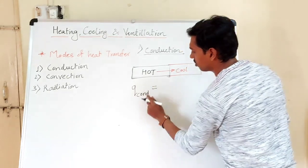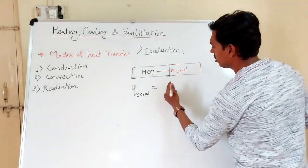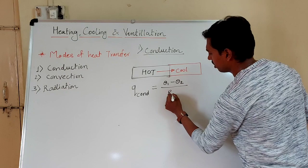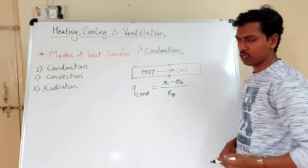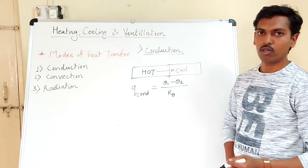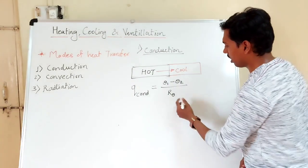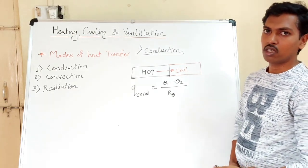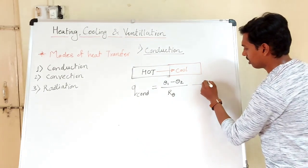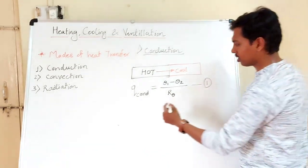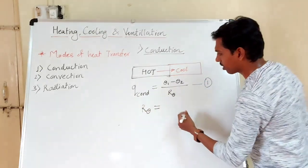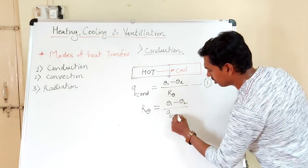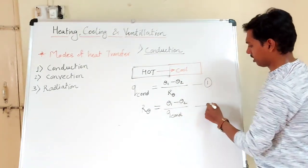The amount of heat transfer by conduction can be expressed empirically as: Q_conduction equals (θ₁ minus θ₂) divided by R_θ, where θ₁ and θ₂ are the temperatures of the two mating surfaces in degrees Celsius, and R_θ is the thermal resistance. This is equation number 1. Equation number 2 gives thermal resistance as R_θ equals (θ₁ minus θ₂) divided by Q_conduction.